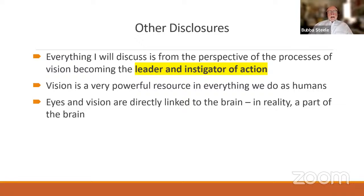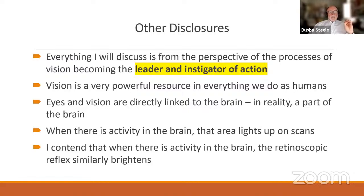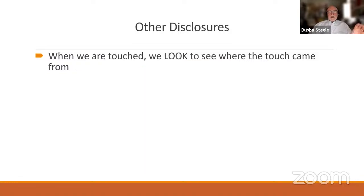We've always been taught that eyes and vision are directly related to the brain. In reality, they're a part of the brain — an extension of the brain. If they're an extension of the brain, then when there's activity in the brain, there will be activity in the eye. When you stimulate a certain part, a certain area lights up on scans. By the same token, I contend that when there's activity in the brain, the retinoscopic reflex similarly brightens.